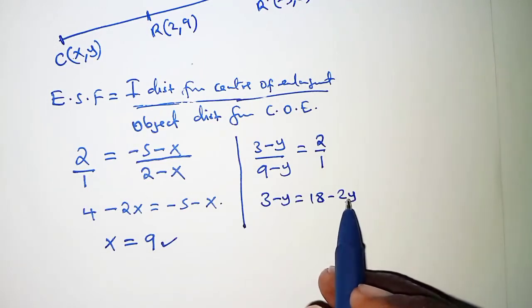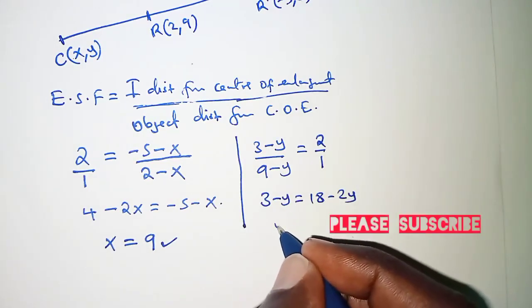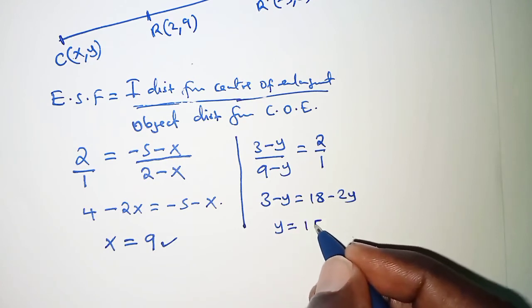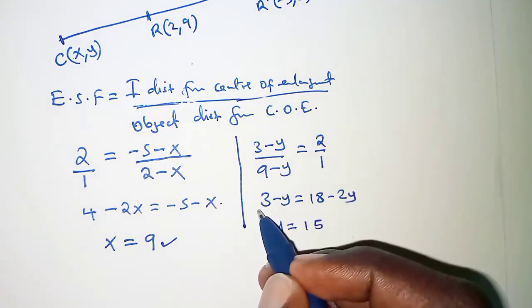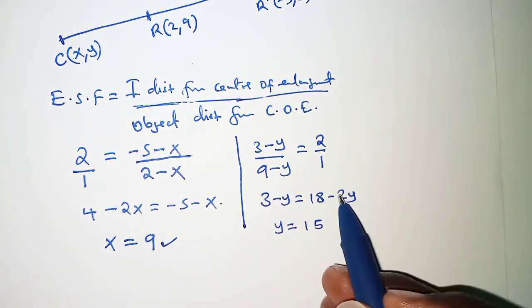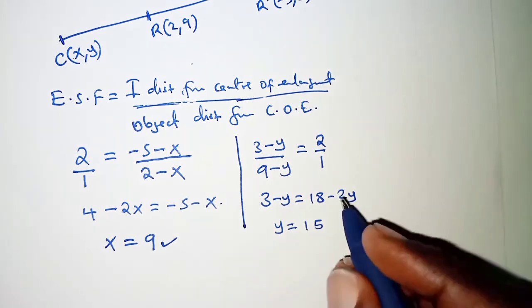So here we will again have y is equal to 15. So 2y will cross so that you have 2y minus y which is y and then 3 comes this side so that we have 18 minus 3 and that is 15.